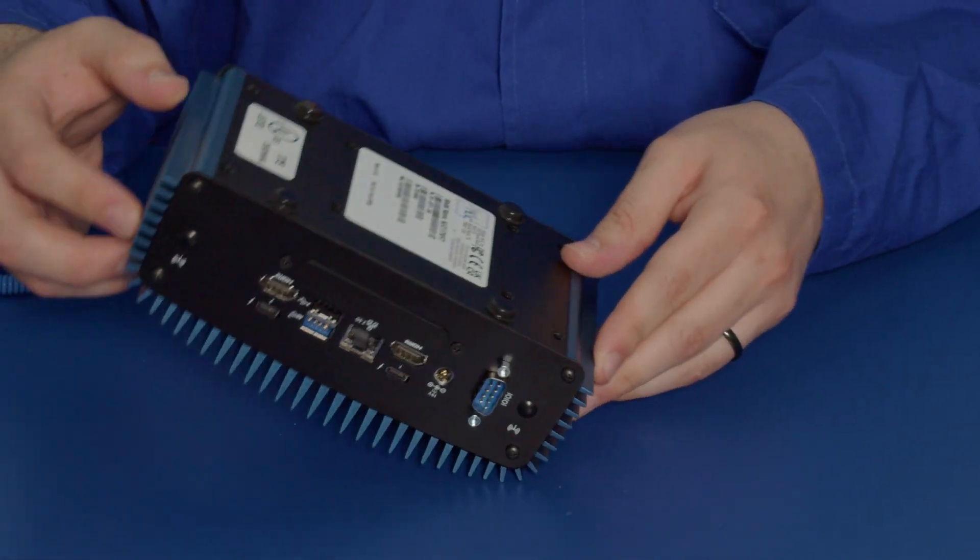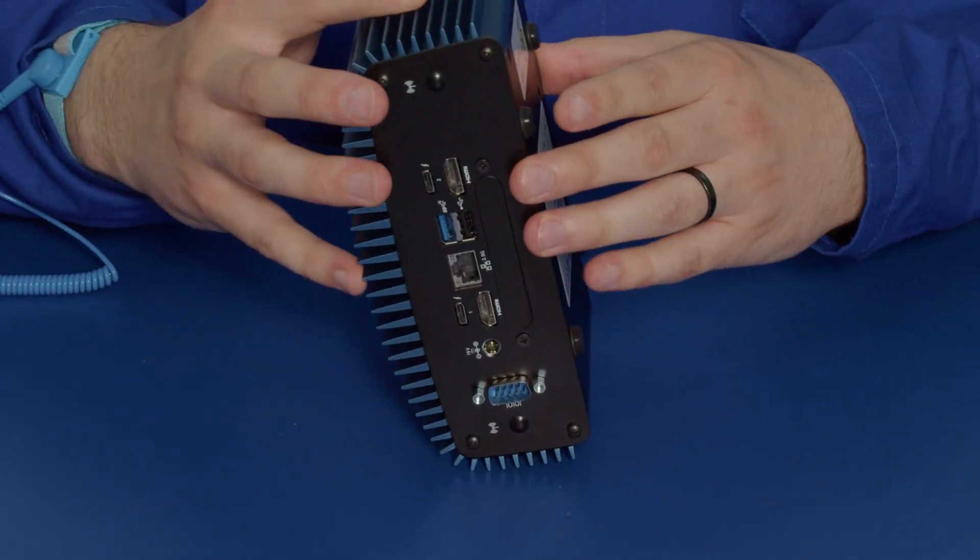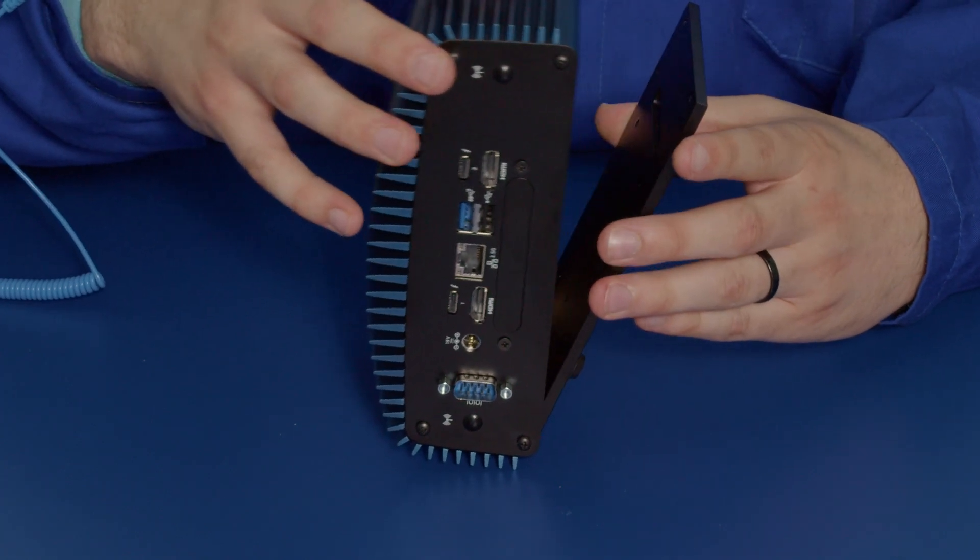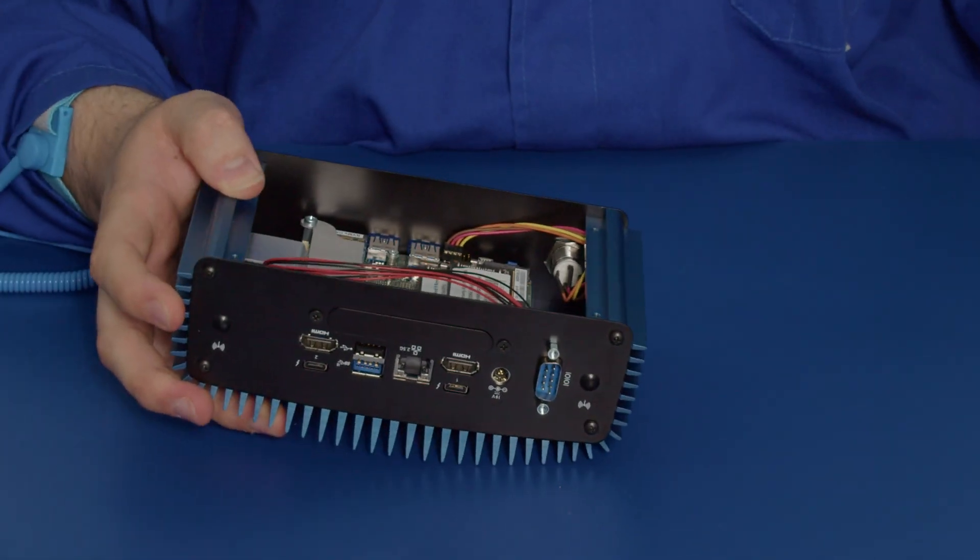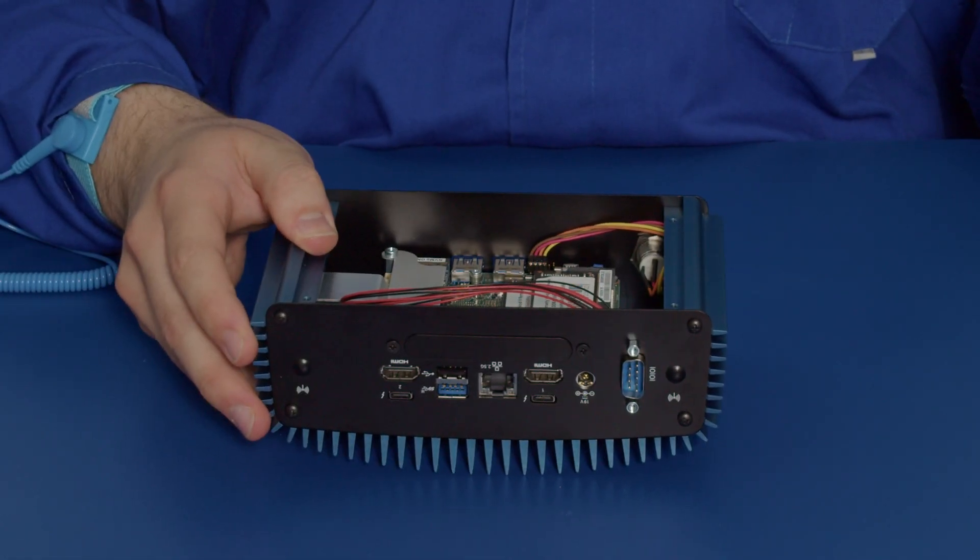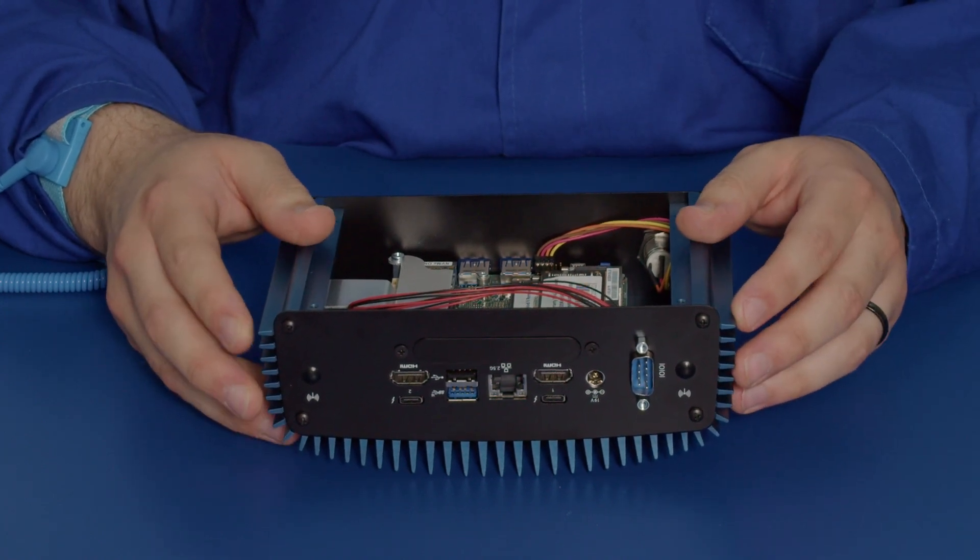So you want to tilt the unit on its side and hold the base plate so it doesn't fall out and then just let it fall like that and place it to the side. Remember the orientation of the base plate as you'll need to put that back on the same way later.